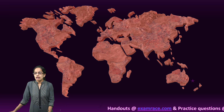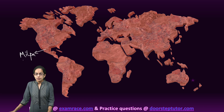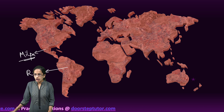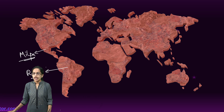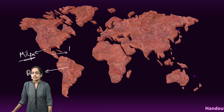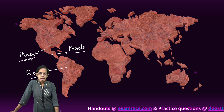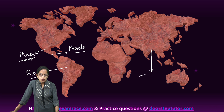Shifting cultivation is known by different names in different parts of the world. In Mexico it is known as milpa; in Brazil it is known as roca; in Central America it is known as masol; and in Myanmar the common name is taungya.